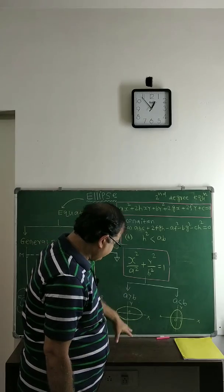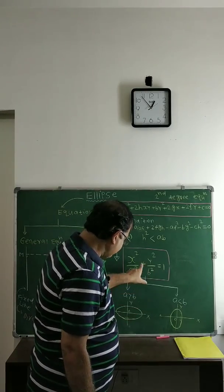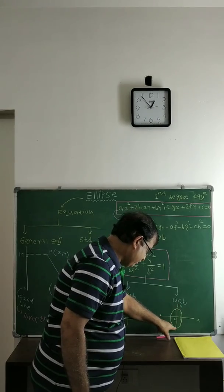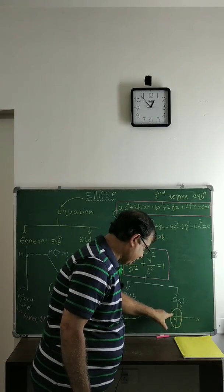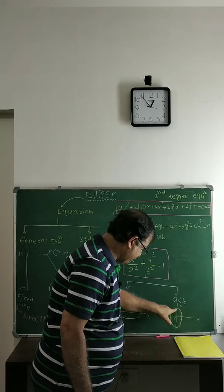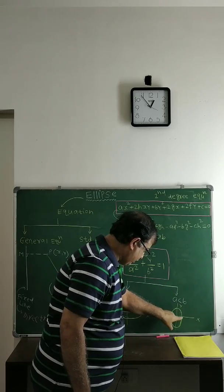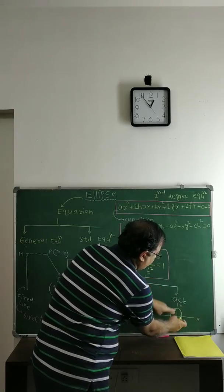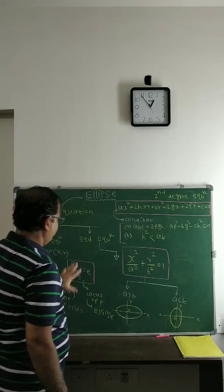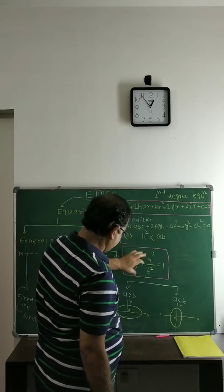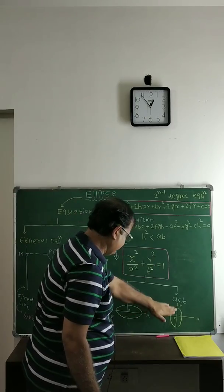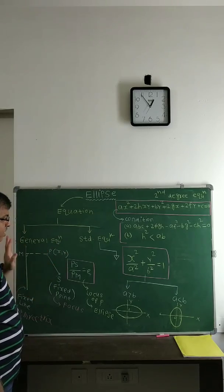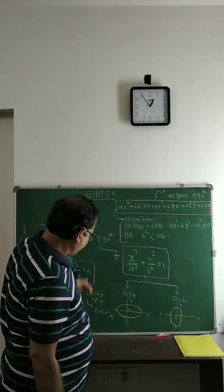If a is less than b, the ellipse will be oriented differently — the y-distance is more than the x-distance, meaning the major axis lies along the y-axis. So x²/a² + y²/b² = 1 is the most general standard equation of an ellipse, covering both orientations, while the general equation is the locus of point P.